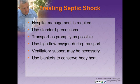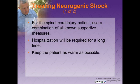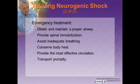The proper treatment of septic shock requires complex hospital management including antibiotics. Use appropriate standard precautions and transport as promptly as possible. Use high-flow oxygen during transport, and ventilatory support may be necessary to maintain adequate tidal volume. Use blankets to conserve body heat. For neurogenic shock, if the patient has a spinal cord injury, use a combination of all known supportive measures. Emergency treatment must be directed at obtaining and maintaining proper airway, providing spinal support, assisting inadequate breathing as necessary, conserving body heat, and providing the most effective circulation possible. Keep the patient warm with blankets and transport properly.